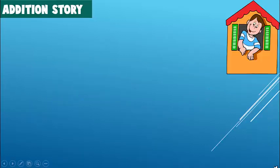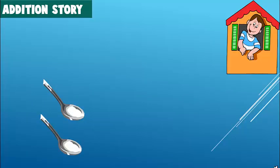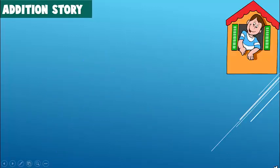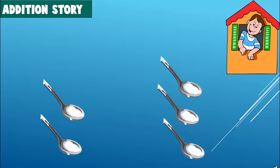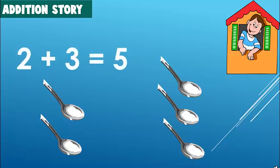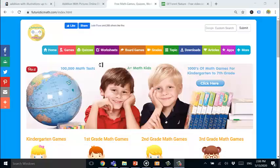Create simple stories around addition. For example, John had a birthday party. Five friends came over to his house. There were only two spoons on the table. John added three more spoons on the table. How many spoons in total are on the table? From such simple stories, start using numbers. In this case, two plus three equals five.